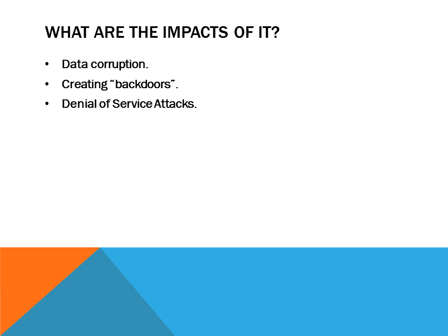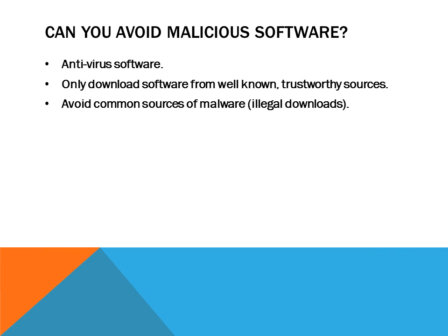Malicious software is very harmful to everyone using computers, and one of the most popular questions is: can you avoid it? There are several ways, including installing antivirus software onto your computer, which will scan programs and other software to make sure they are virus-free before you install them. Another way is to only download software from well-known, trustworthy sources — don't go to the back waters of the internet to find free downloadable software, because it could contain a worm or a Trojan horse. Finally, avoid common sources of malware such as illegal downloads. If it's illegal to download, it's probably not from trustworthy people and they might have included something harmful like a virus.